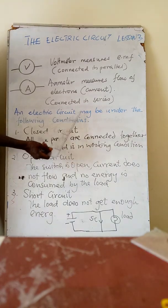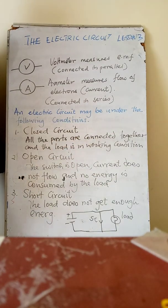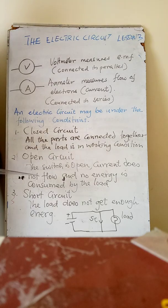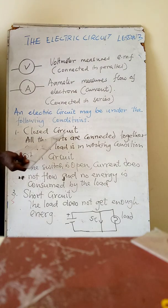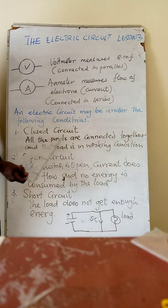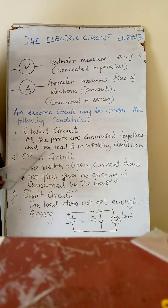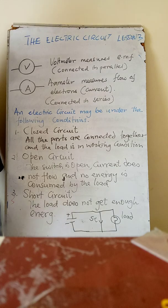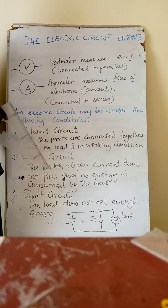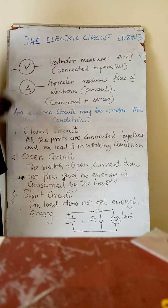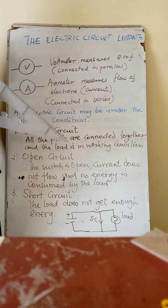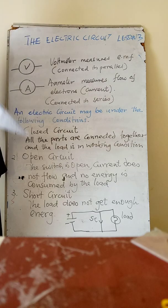An electric circuit may be under any of three conditions. The first is called a closed circuit. A closed circuit is a circuit where all the parts are connected together and the load is in working condition. What connects them together is a conductor — a wire — which connects device 1 to device 2, from 2 to 3, and back to 1.